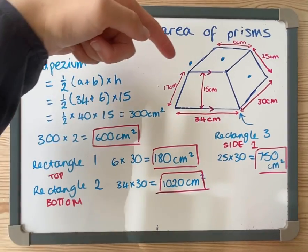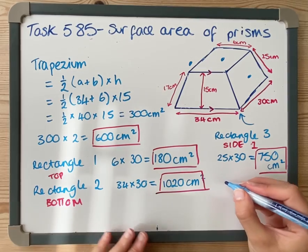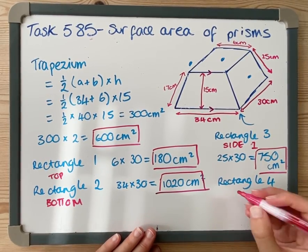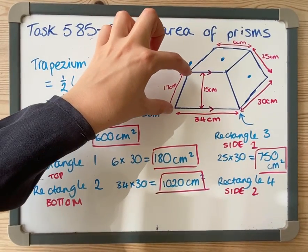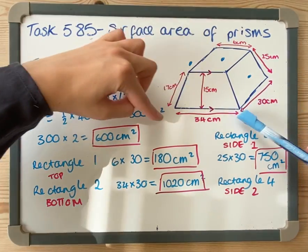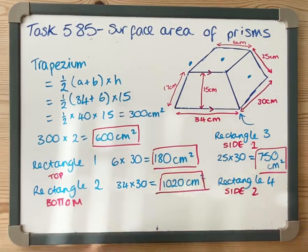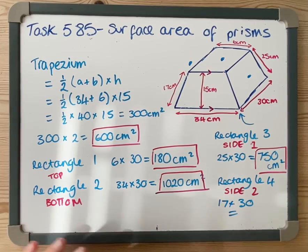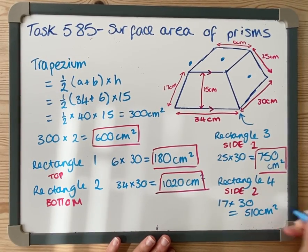And then finally, I've got this rectangle on that side that we can't actually see, but it obviously is there. So this is our final rectangle, side two. This length we're told is 17. This length going across is going to be the same as this one. If you imagine that, these are the same, those are the same, they're all 30. So it's going to be 17 times 30, and 17 times 30 is 510 centimeters squared.